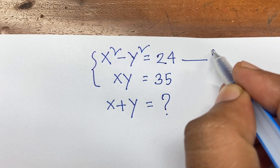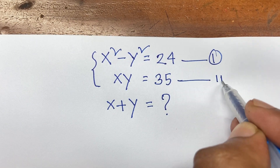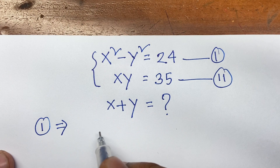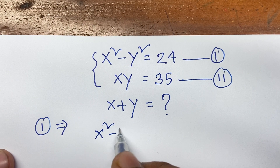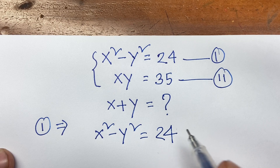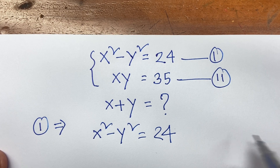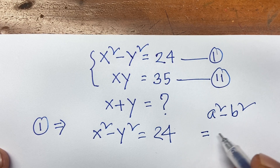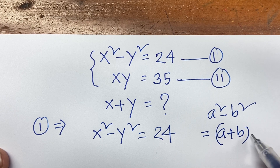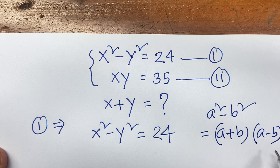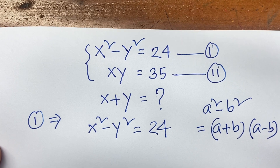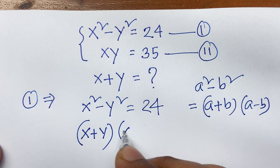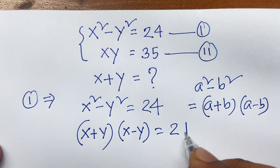It is the first equation, and it is the second equation. According to the first equation, we know that x squared minus y squared equals 24. We know the algebra rule: a squared minus b squared equals (a plus b) times (a minus b). Now I apply this in this case, so I can say (x plus y) times (x minus y) equals 24.